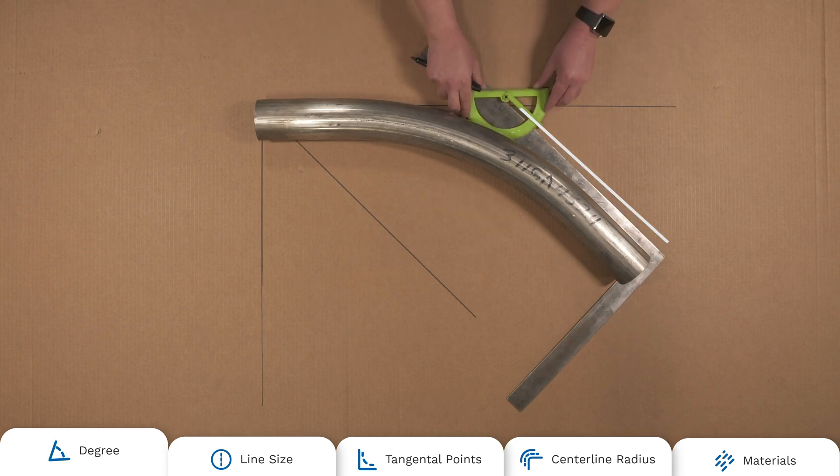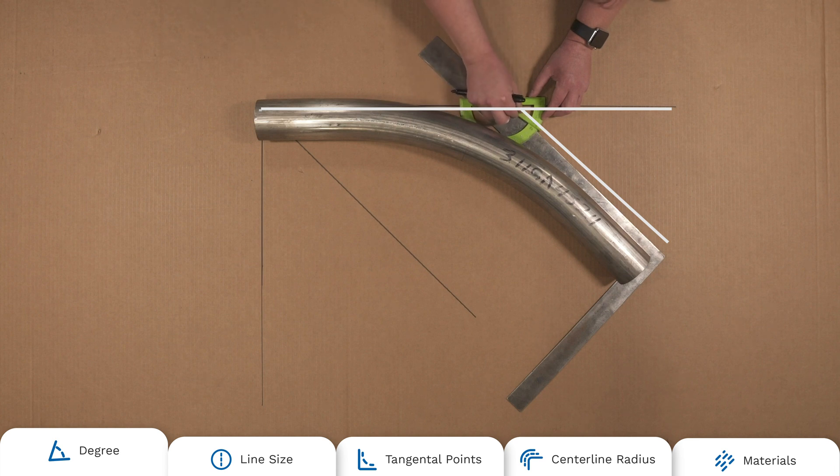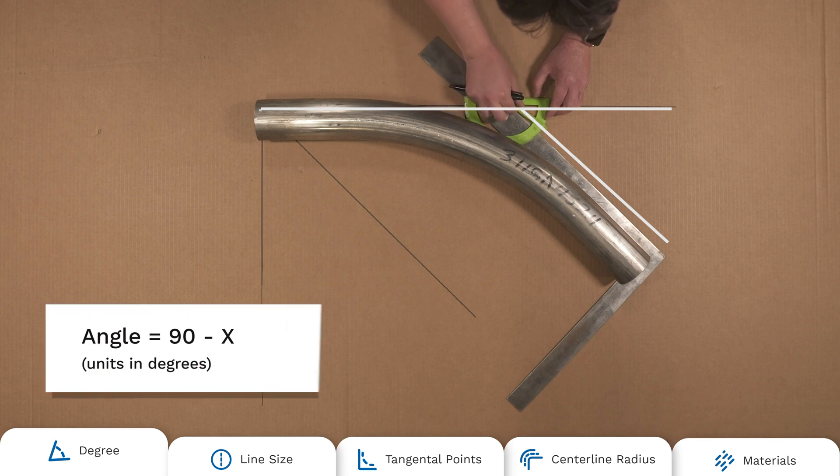Now you will want to align the baseline of the protractor to the x-axis. Using the rule blade, get the angle measurement from the outer scale. You will then need to subtract this measurement from the 90 degrees to get the angle of the elbow.